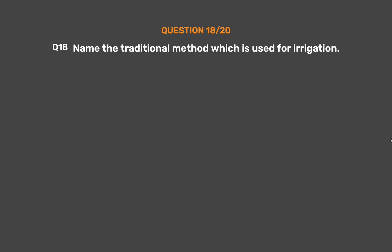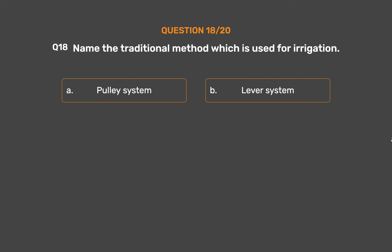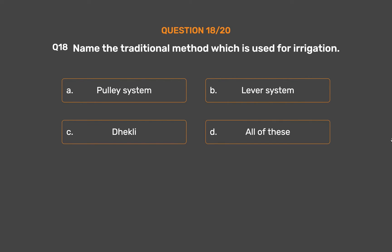Question No. 18: Name the traditional method which is used for irrigation. Option A: Pulley system. Option B: Lever system. Option C: Dhekli. Option D: All of these.